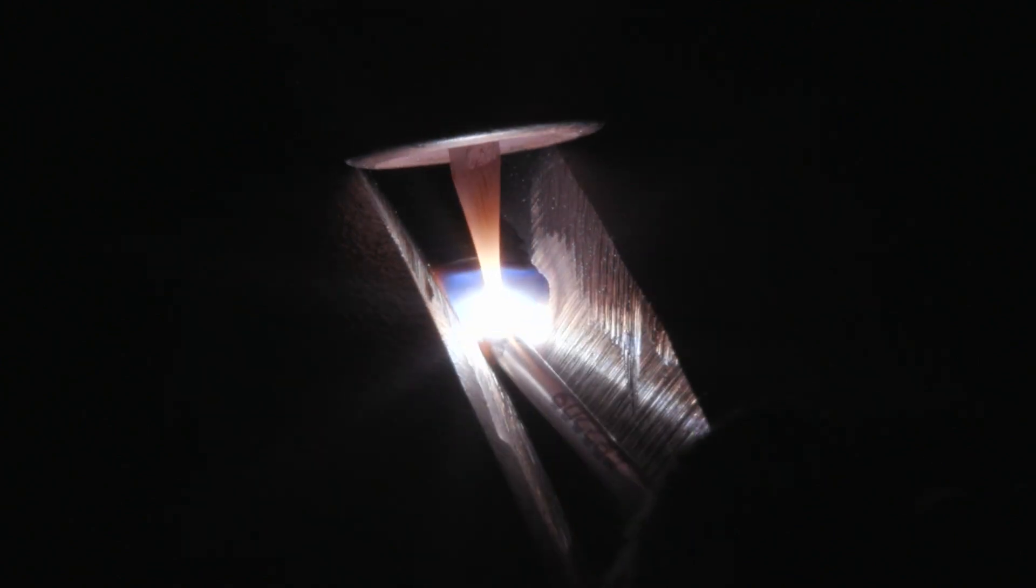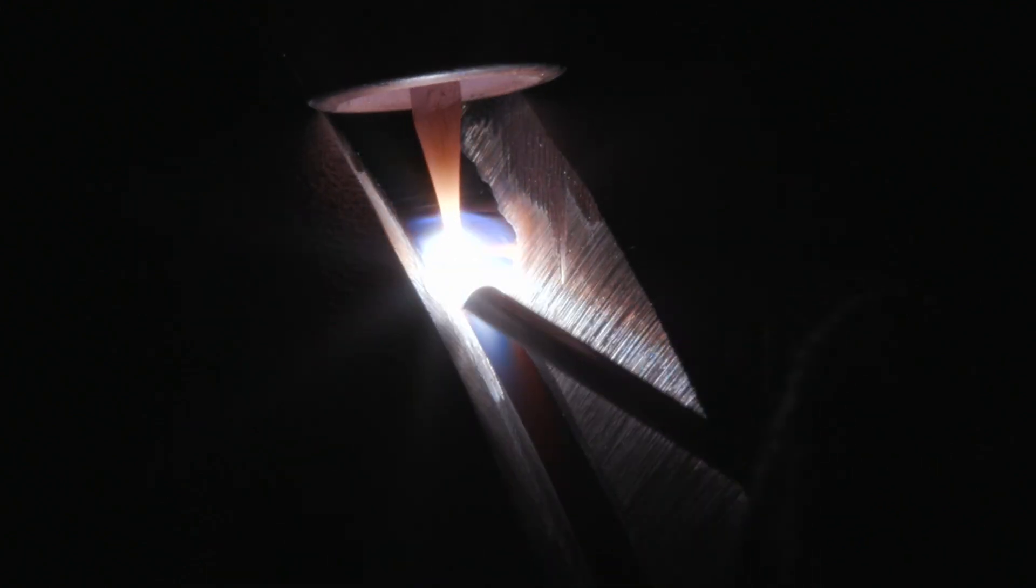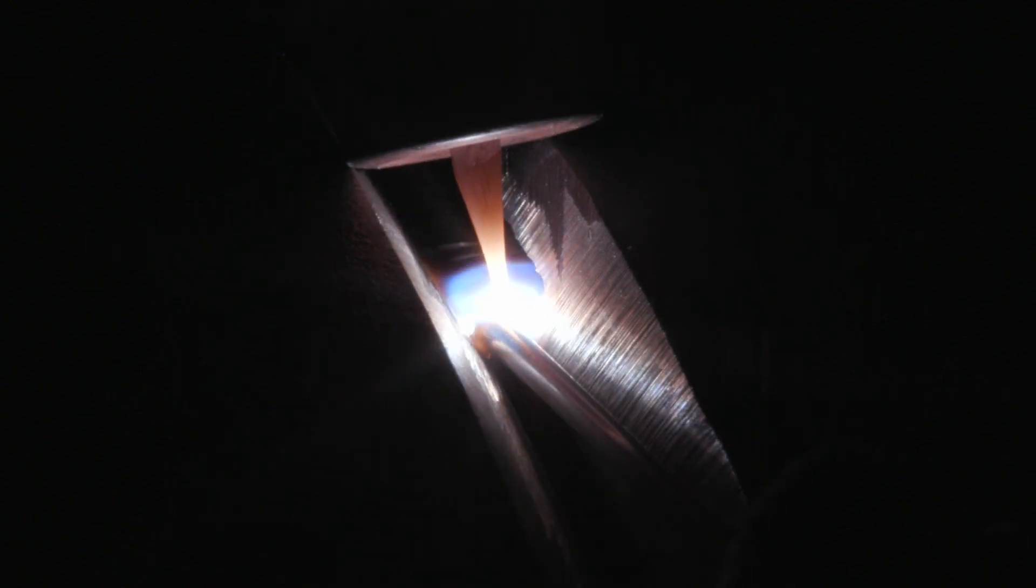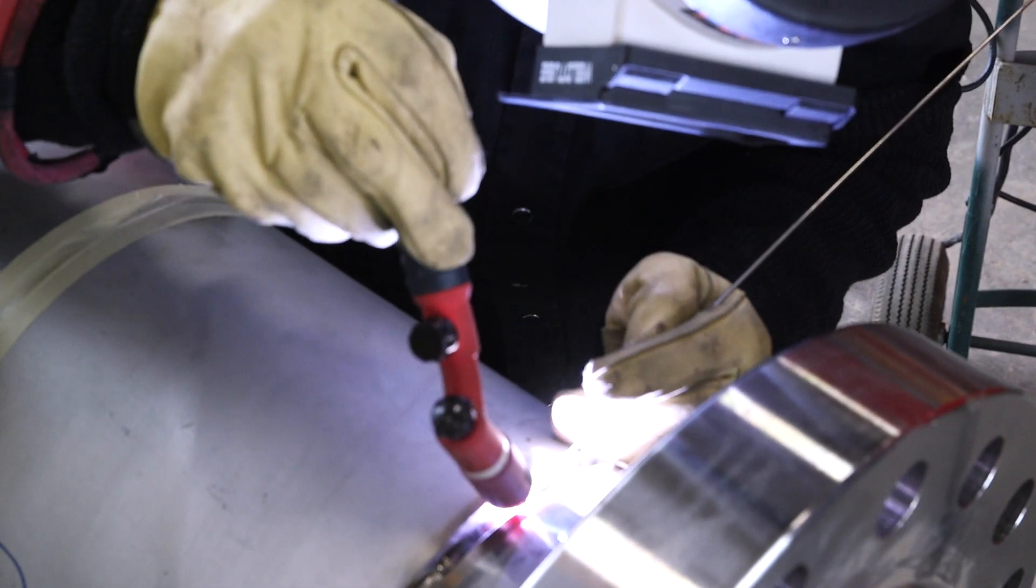Now if you'll also notice that the weld puddle, it kind of bounces back when I'm removing the, well, I'm breaking the surface tension. When I remove the filler metal from the weld puddle, it's kind of agitating it.